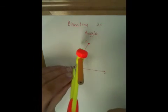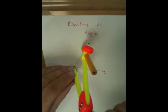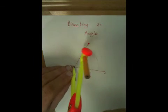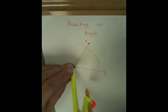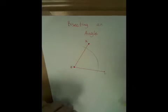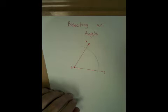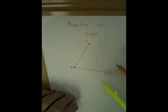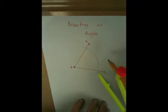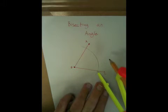the vertex, through the entire angle, making sure to hit both line segments. Now put your point on the spot where the arc you just swept intersects